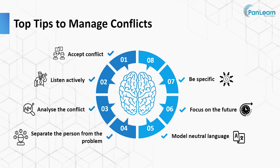Be Specific. When solving problems, be very specific. Clarify ambiguous terms that each person may interpret differently. Maintain confidentiality — encourage others who are in conflict to deal directly with the person they are in conflict with. Avoiding the conflict when you shouldn't will escalate the conflict and fuel the rumor mill.